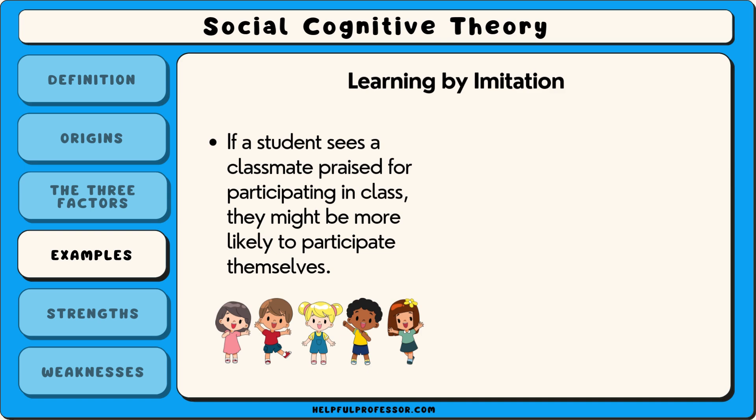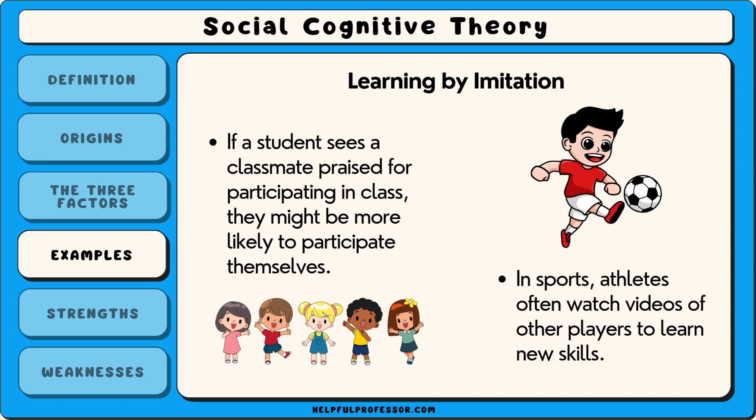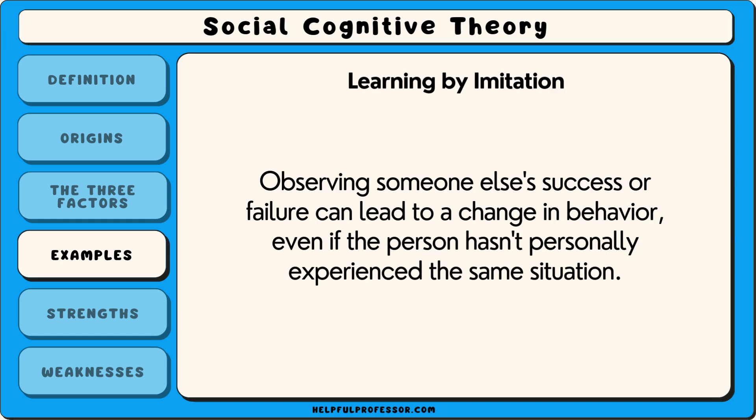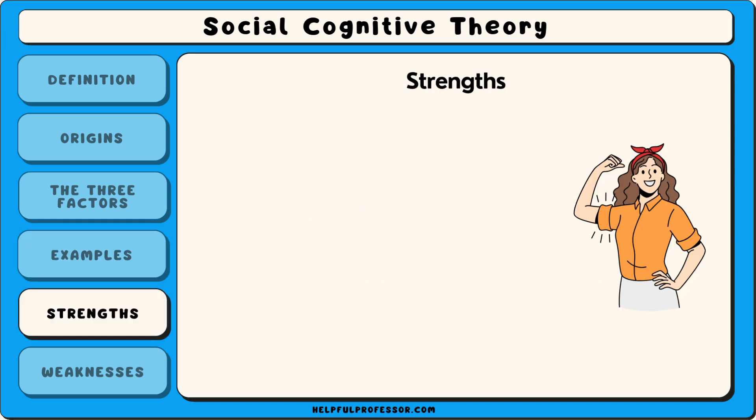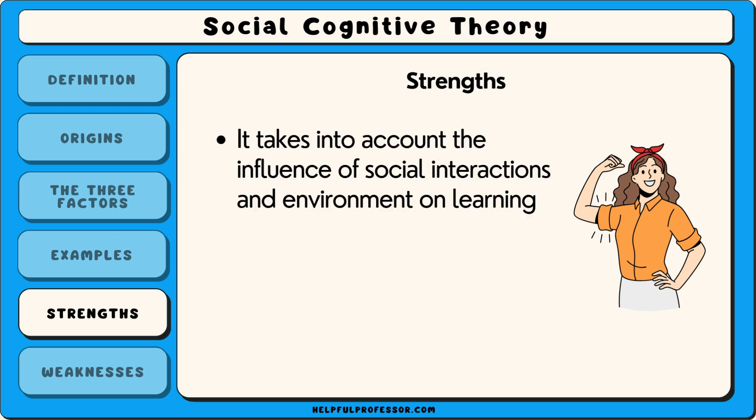If a student sees a classmate praised for participating in class, they might be more likely to participate themselves. In sports, athletes often watch videos of other players to learn new skills. Observing someone else's success or failure can lead to a change in behaviour, even if the person hasn't personally experienced the same situation.